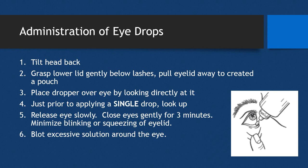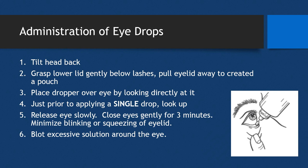For an eye drop, counsel the patient to first wash their hands — one of the most important steps to prevent eye infection. Then tilt the head back, grasp the lower eyelid gently right below the eyelashes, and pull that eyelid away to create a pouch where the eye drop will fall. Place the dropper directly over the eye — never touching the dropper to the eye or eyelid. Have the patient look up right before applying, to help the drop fall down the ocular surface into that pocket. Apply a single drop at a time.